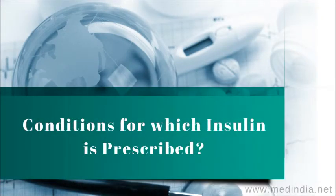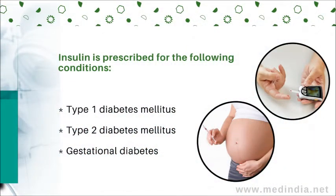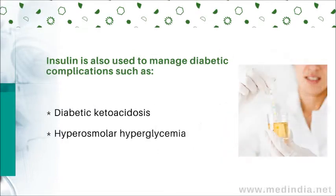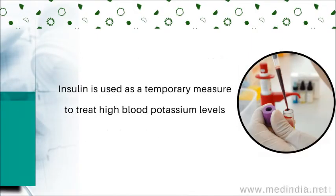Conditions for which insulin is prescribed: Type 1 diabetes mellitus, type 2 diabetes mellitus, and gestational diabetes. Insulin is also used to manage diabetic complications such as diabetic ketoacidosis and hyperosmolar hypoglycemia. Additionally, insulin is used as a temporary measure to treat high blood potassium levels.